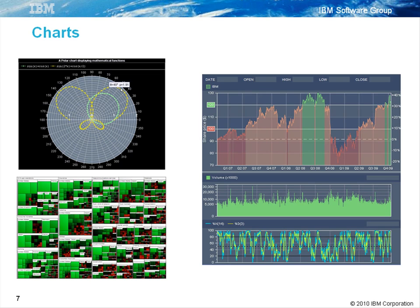Here are some classic chart displays provided in the product. First is a scientific chart, below it is a tree map chart, and on the right is a combination of area and line charts. This particular one is a stock chart example and has three parallel charts.